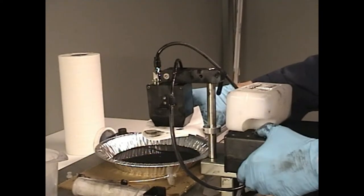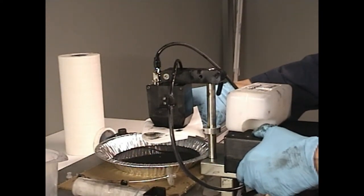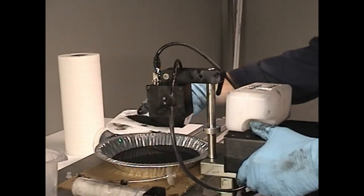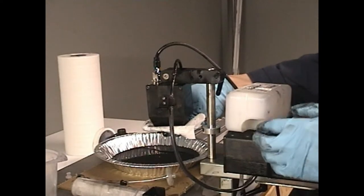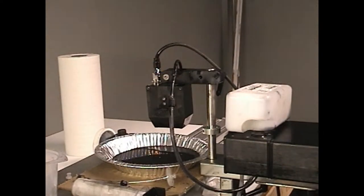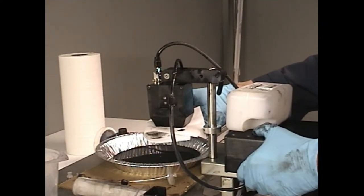To prime your printer and begin printing, first take a non-abrasive, lint-free towel and hold it underneath your print engine and gently squeeze the priming bulb. You can carefully and gently wipe any excess ink from the front of the print engine.